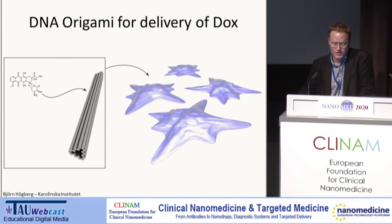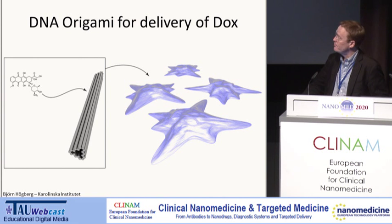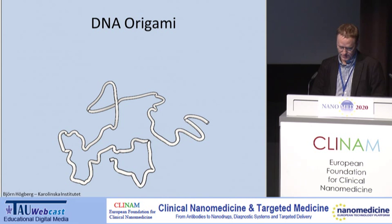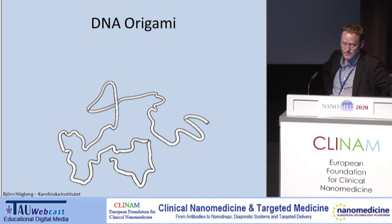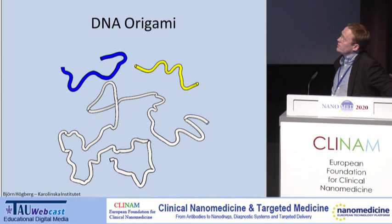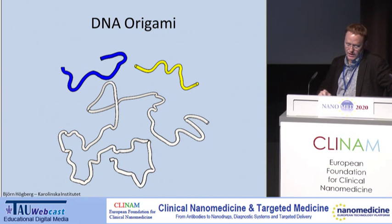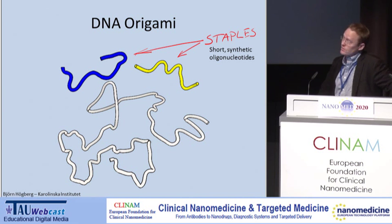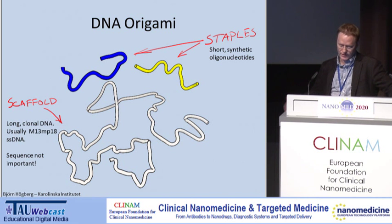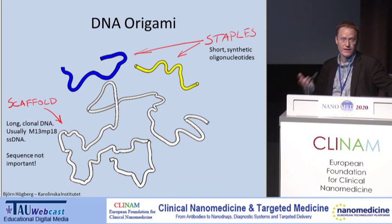Before I show you more of this, I want to briefly go through the basics of how we build these structures using DNA origami. DNA origami works by taking one long single-stranded DNA scaffold and mixing it with a bunch of short single-stranded DNA oligonucleotides, usually about 40 bases long, which we call staples. The short oligos are synthetic, and the long scaffold DNA is almost always clonal DNA, usually from a single-stranded DNA bacteriophage virus, because that's an easy way to produce it.